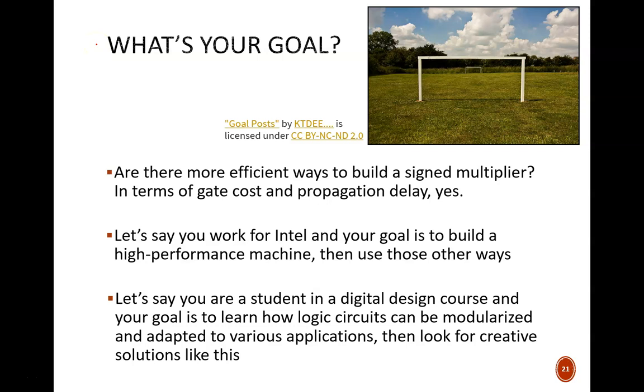Are there more efficient ways to build a signed multiplier? In terms of gate cost and propagation delay, yes. The circuit we just designed is a little cumbersome at the gate level. For perspective, each negator 4 holds 12 gates, and the unsigned multiplier holds 124 gates. Let's say you work for Intel, and your goal is to build a high-performance machine. In that case, you would not use this design. But is that really our goal here? No, our goal is to learn digital design.